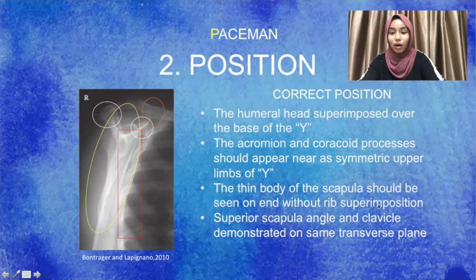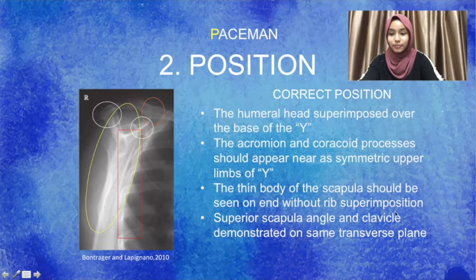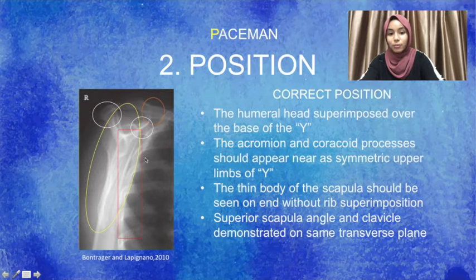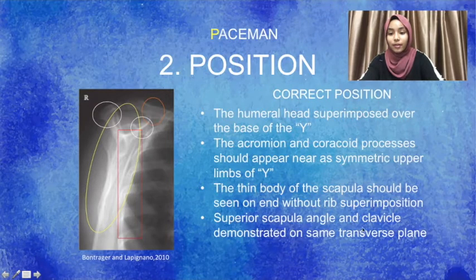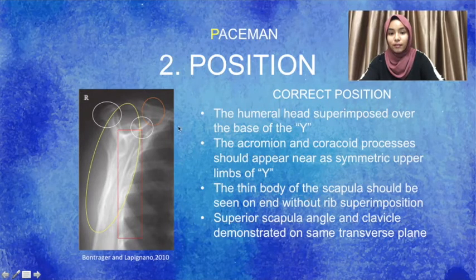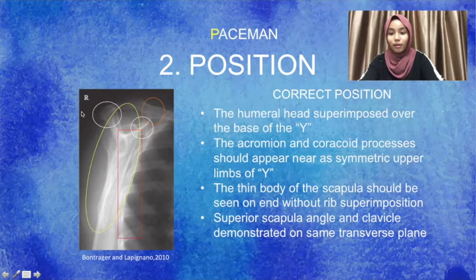The thin body of the scapula should be seen without rib superimposition — this is the body of the scapula and it is seen without any rib superimposition. The superior scapula angle and clavicle should be demonstrated on the same transverse plane — this is the clavicle and this is the superior scapula angle, demonstrated on the same transverse plane.